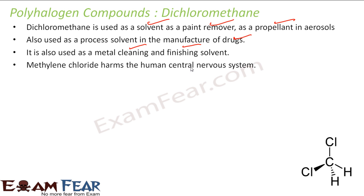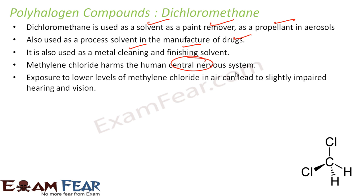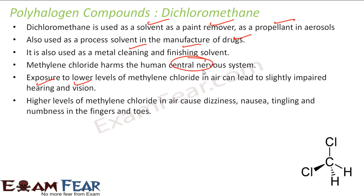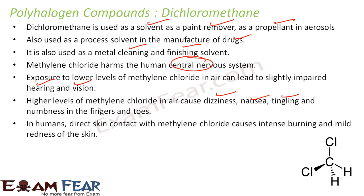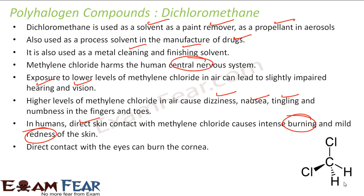Dichloromethane harms the central nervous system. It can impair your hearing and vision quality. It can cause dizziness, nausea, tingling, and other such conditions. Direct contact with skin can cause burning and redness. The structure is CH2Cl2. Direct contact with the eyes can also burn the cornea. It is very harmful.